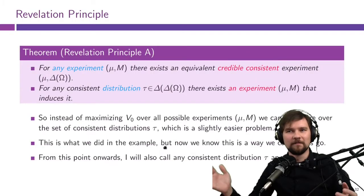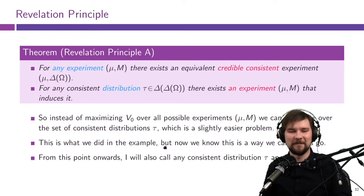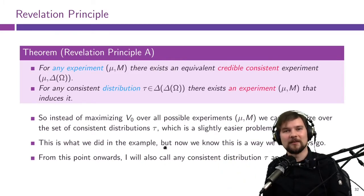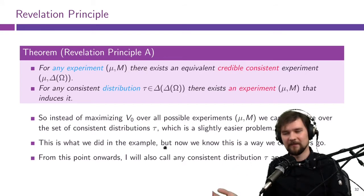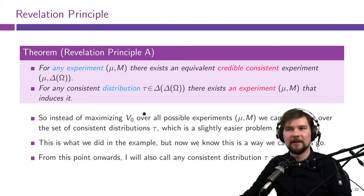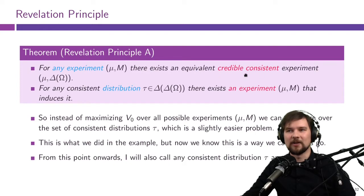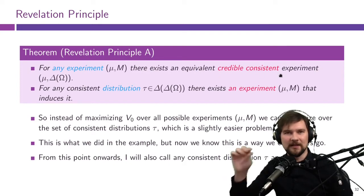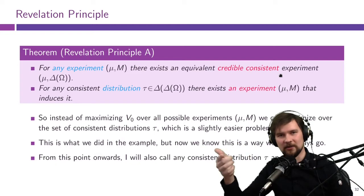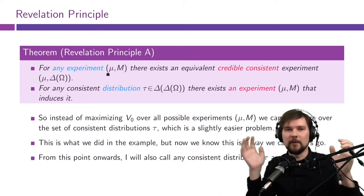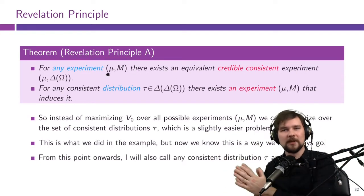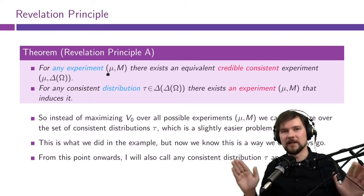The revelation principle for this setting says that it is without loss of generality to consider this class of direct mechanisms. Meaning that for any experiment μ, there exists an equivalent credible consistent experiment. This is the relatively trivial part — we can take any experiment and reduce it to some credible consistent experiment by just relabeling the messages a little bit.